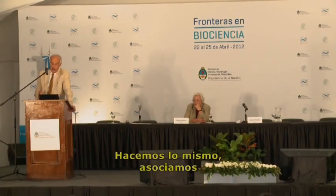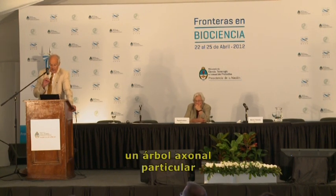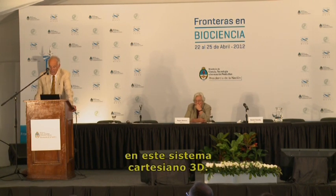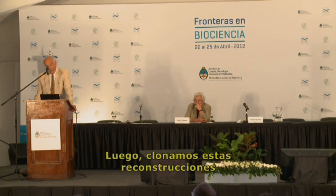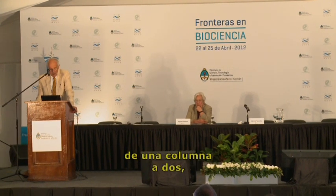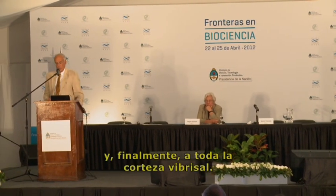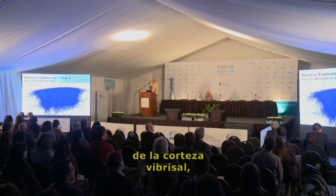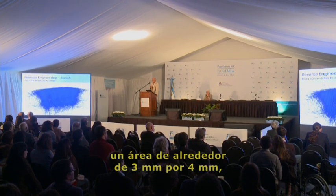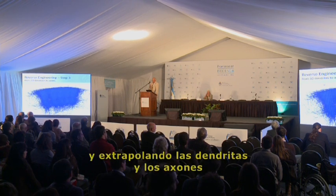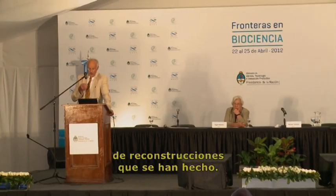We associate a particular axonal arbor that belongs to a dendritic cell type into this 3D Cartesian system, and then sort of clone these reconstructions from one column to two columns, finally to the whole vibrissae cortex. So we have a complete reconstruction of the vibrissae cortex as an area of about 3 millimeters by 4 millimeters, using measured soma distances and extrapolating the dendrites and the axons from a restricted number of reconstructions that we have made.